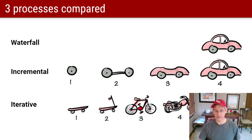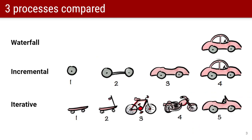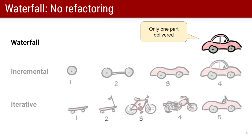Let's take a look at the three of these and get George off the screen. A waterfall process is characterized by designing the system at the beginning and working hard to deliver just that thing you've designed. We contrast that with an incremental process, where you build it part by part until the whole thing is assembled as a car. And then an iterative process, where you build smaller, less feature-rich versions of the thing iteratively.